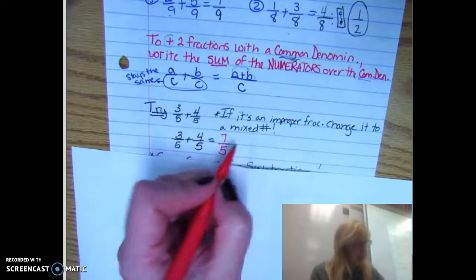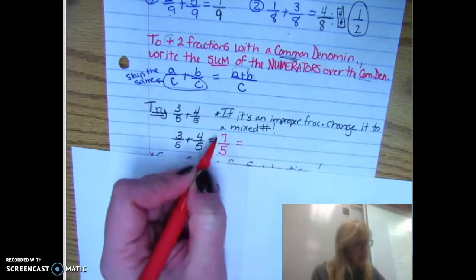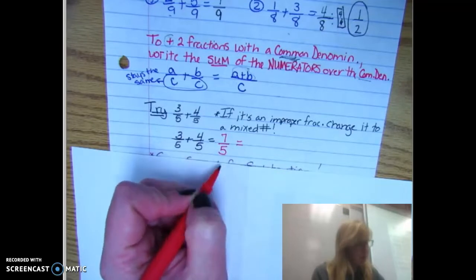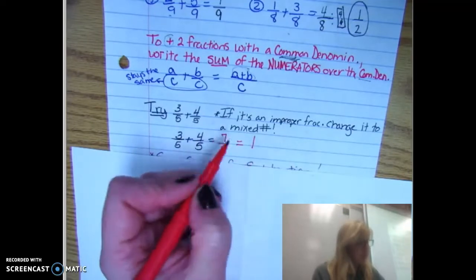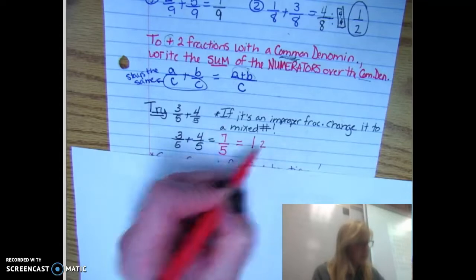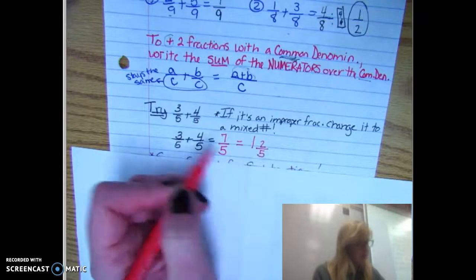So now I have seven fifths. So if I were to change that back into a mixed number, I know five will go into seven a total of one time with two leftovers because you can count two up to seven.